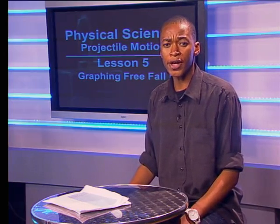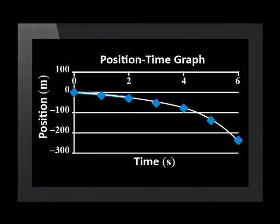What does the gradient of the displacement time graph tell us? This graph gradient gets steeper and steeper. This shows us that the ball's velocity gets faster and faster as time passes.